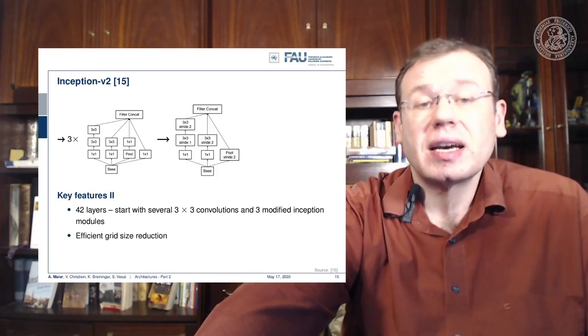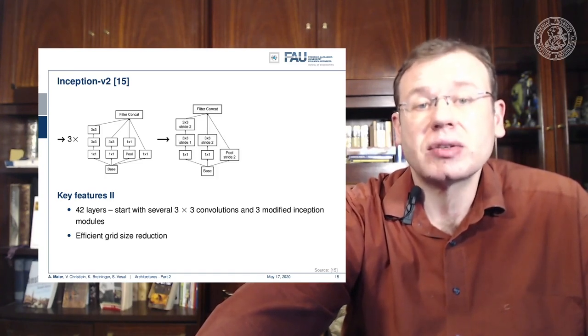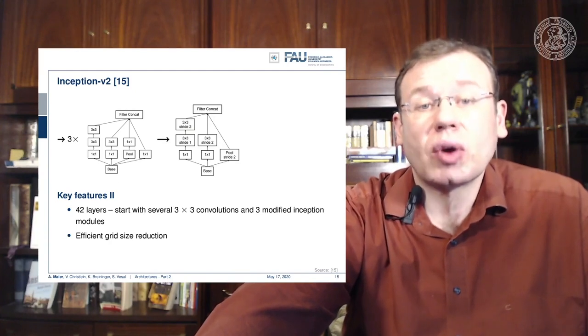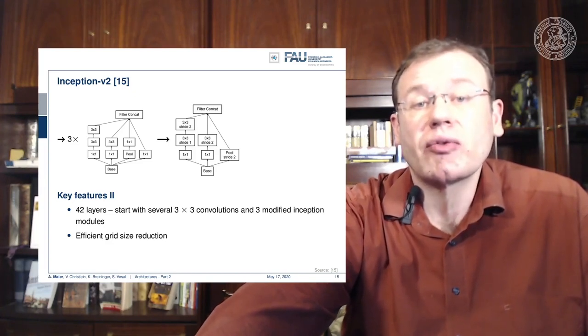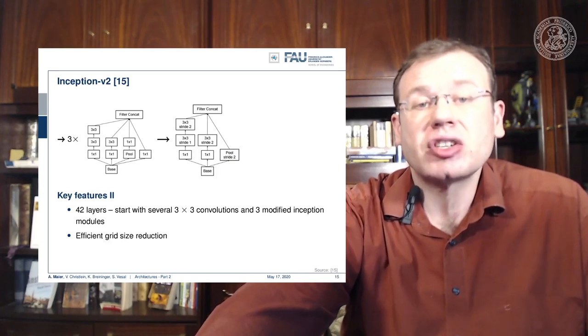Then in the next layer, an efficient grid size reduction is introduced that is using strided convolutions. You have one by one convolutions for channel compression and then a three by three convolution with stride one followed by a stride two, and this essentially effectively replaces